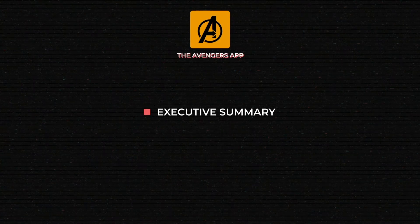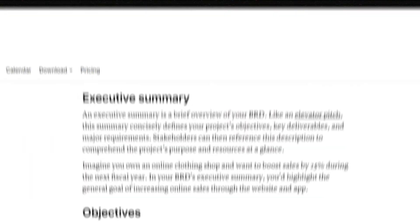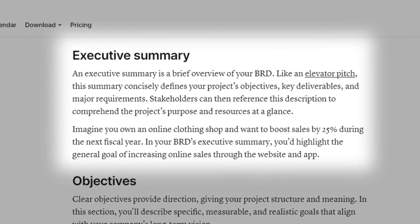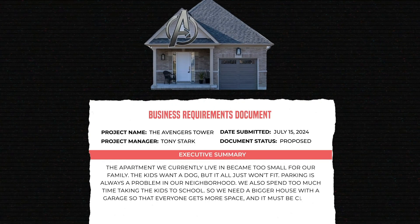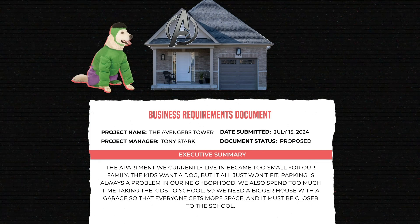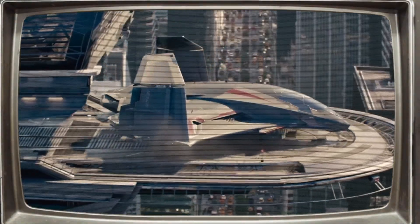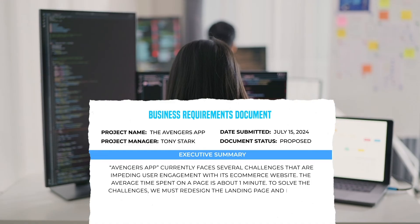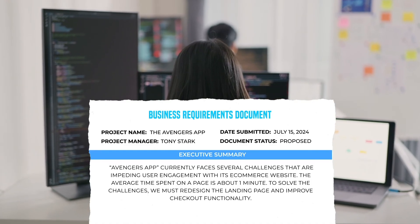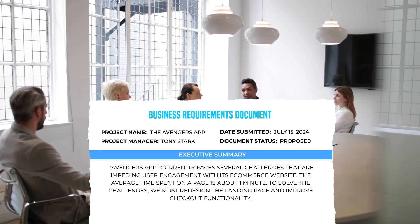It all starts with an Executive Summary — a short description of the project's background and main target. Though it's usually just a few paragraphs long, it must explain why you initiated the project at all. Getting back to our house construction example, an Executive Summary could be something like: the apartment we currently live in became too small for our family; the kids want a dog but it all just won't fit; parking is always a problem; we spend too much time taking the kids to school. So we need a bigger house with a garage, closer to the school. For a software project, write about the specific challenges you want to address and the proposed solutions. It's also the right place to provide relevant statistics or market data to add credibility and justify the need for a project.